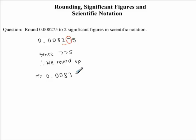Now we need to write this in scientific notation. To write this number in scientific notation, we want our decimal to be after the first significant figure. In our case, our first significant figure is the 8. So we want our decimal to be after the 8.